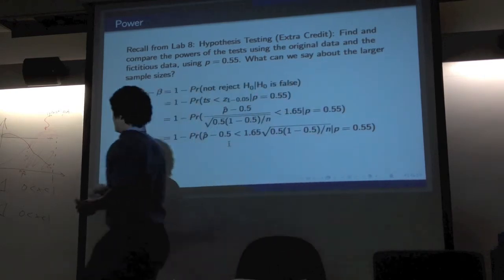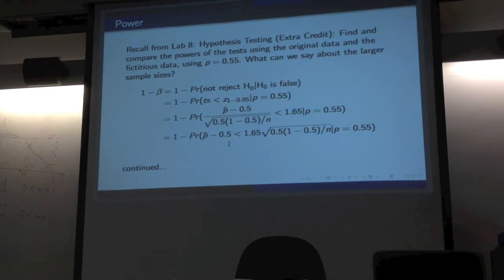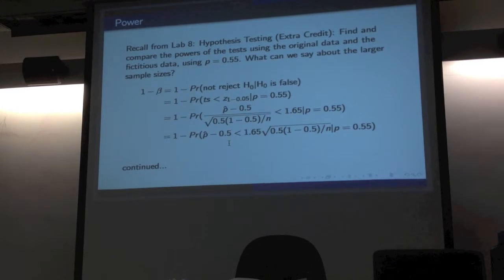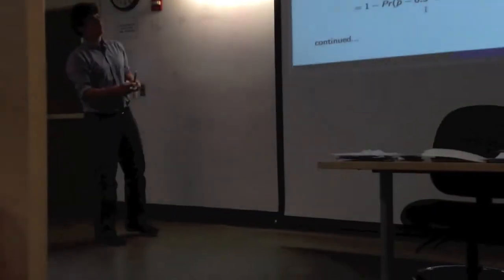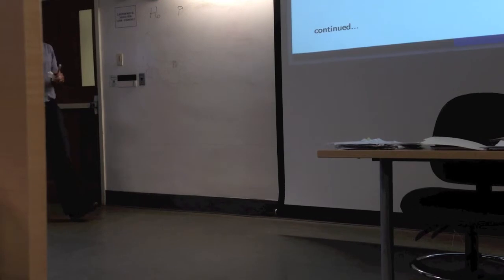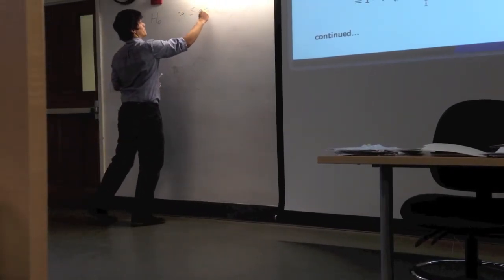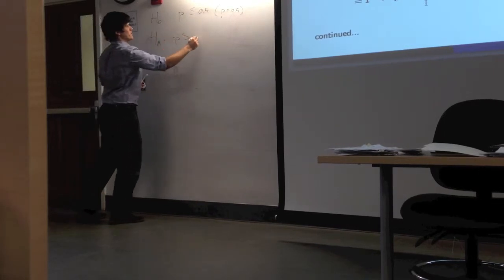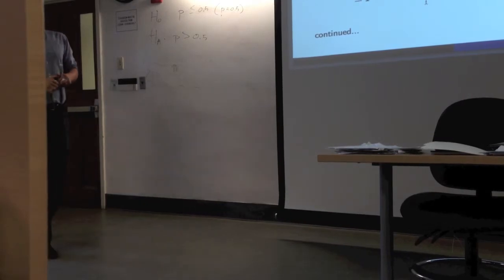What was our null hypothesis for that test? We're dealing with p. Our null value was 0.5. Because our hypothesis was to show that these medical devices are fixable most of the time, H-naught was p ≤ 0.5 (or p = 0.5). Our alternative was p > 0.5. Those are our original tests.